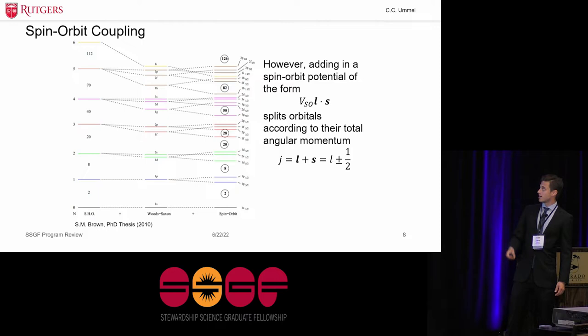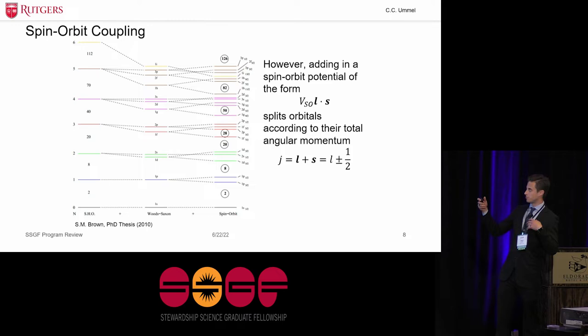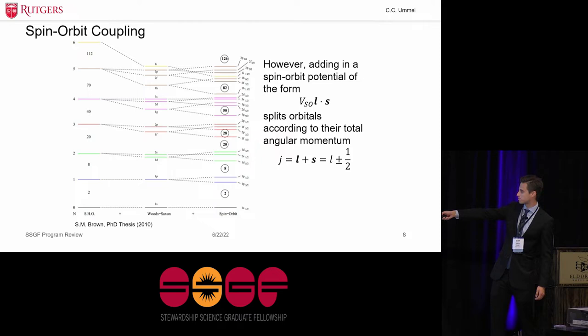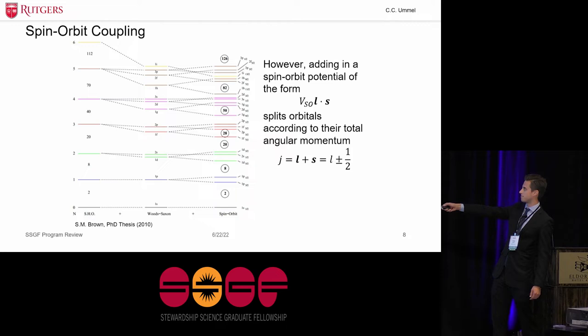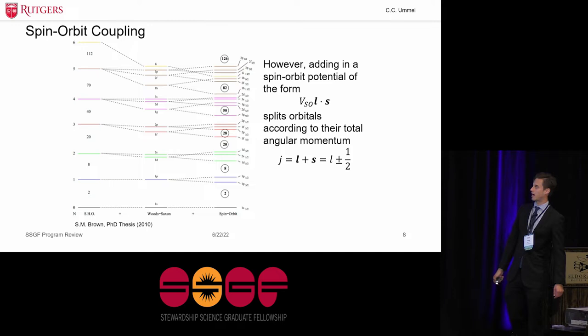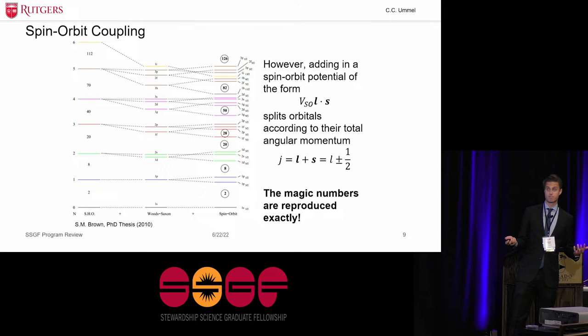And what Maria Goeppert-Mayer and Hans Jensen came up with is, they looked back to atomic physics, and they included a spin orbit potential of the form L dot S. And this actually won them a Nobel Prize. And what this does is you split your orbitals according to their total angular momentum J, which is the vector sum of L and S, S always being one-half for your neutrons and protons. And so if you choose P_SO to be negative, this 1P orbital is split into a 1P three-halves and a 1P one-halves. The orbital with higher angular momentum is pushed downward in energy, and the orbital with lower angular momentum is pushed upward. And the splitting can be so dramatic that, for example, if we look at this 1F orbital here that's split into a 1F seven-halves and a 1F five-halves, the 1F seven-halves is pushed down so far in energy that we actually produce a shell gap at 28. So with correct choices for the Wood-Saxon potential parameters and the spin orbit potential parameters, we can reproduce the magic numbers exactly. So that's the basis of the shell model.